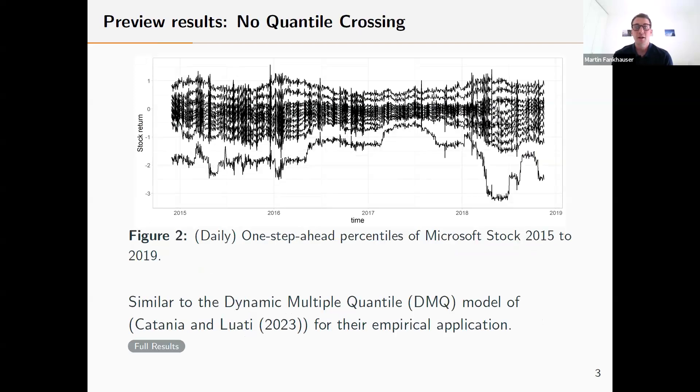In a second empirical example, I replicate the empirical analysis of Catania and Duati, which is interested in forecasting the one step ahead percentiles of the Microsoft stock corporation. I show that my method performs similarly to the dynamic multiple quantile model they propose in the same paper published in Journal of Econometrics.